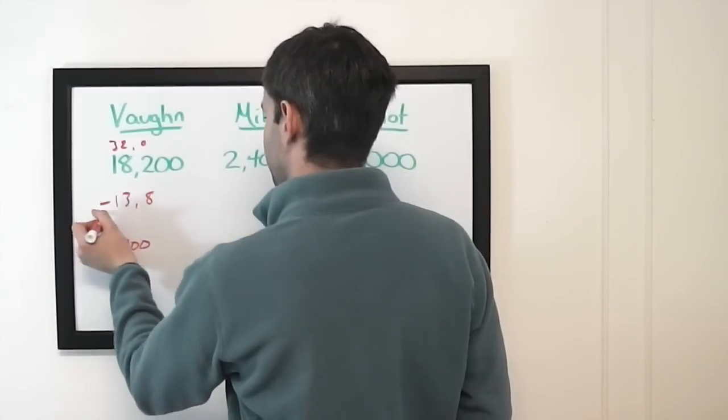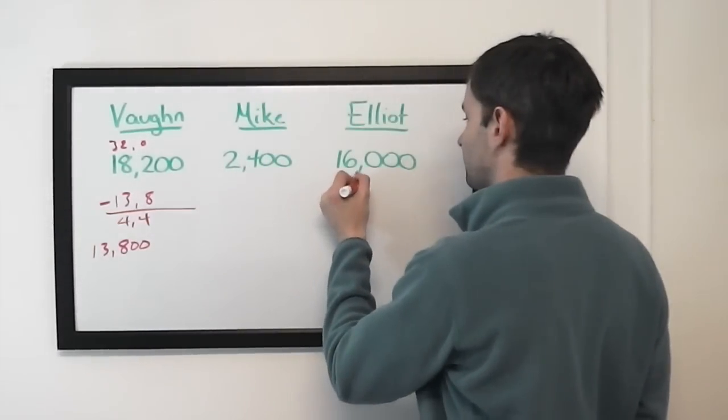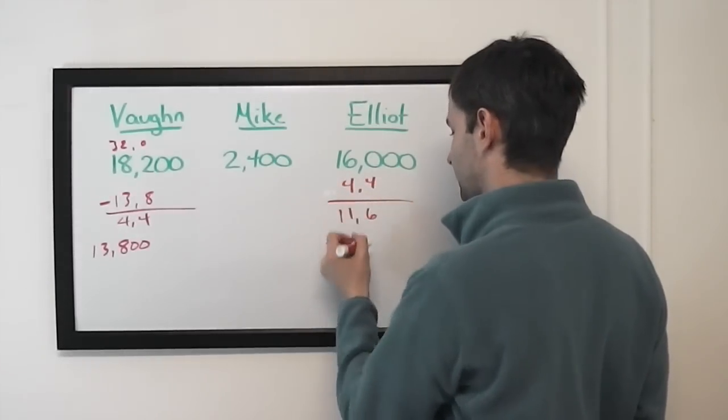He's wrong with that wager. He's going to be left with 4,400, so for Elliott to stay above him, that's going to be 11,600.